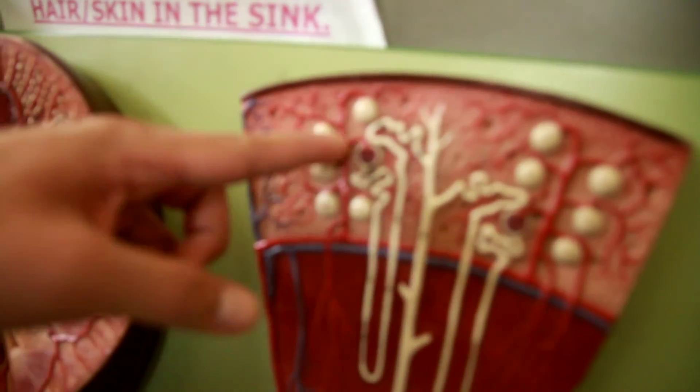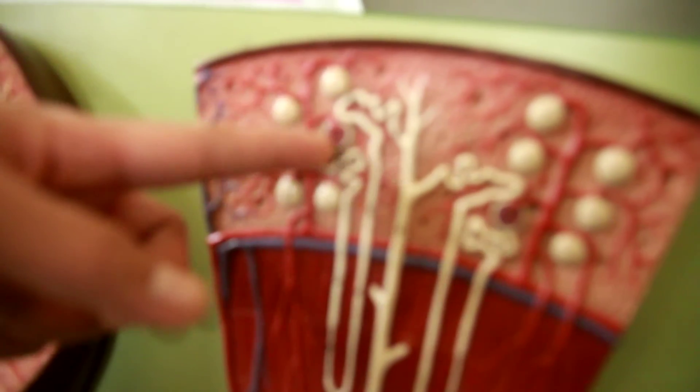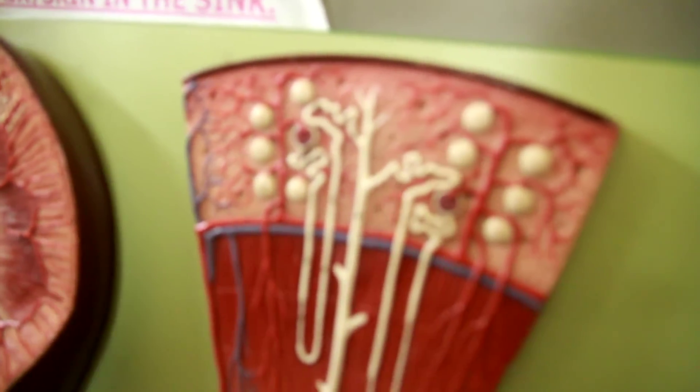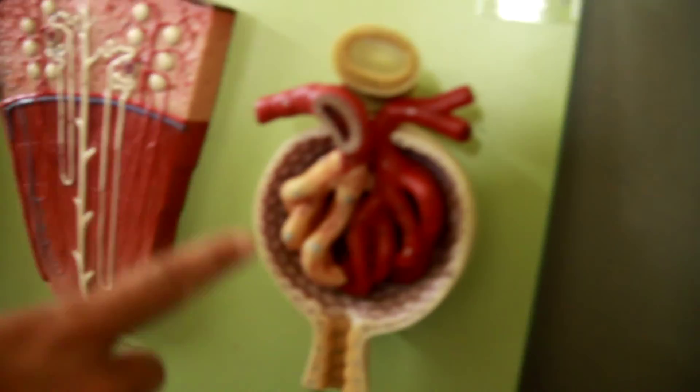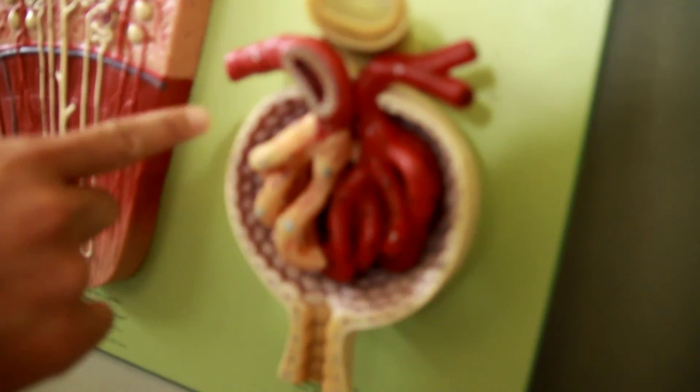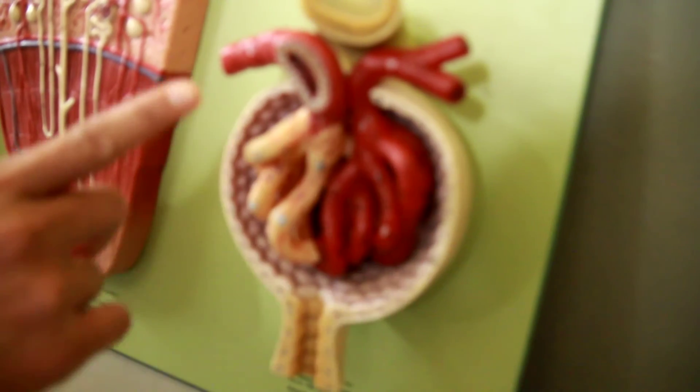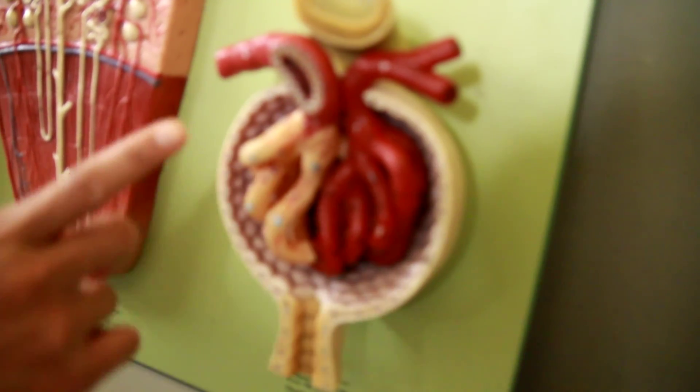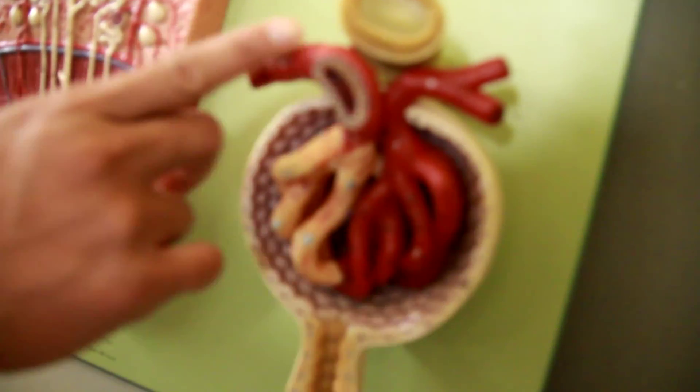And then you have the arterioles. Afferent goes into the glomerulus, and the efferent comes out of the glomerulus. The efferent is the smaller one coming out. Afferent is the one going toward the glomerulus.